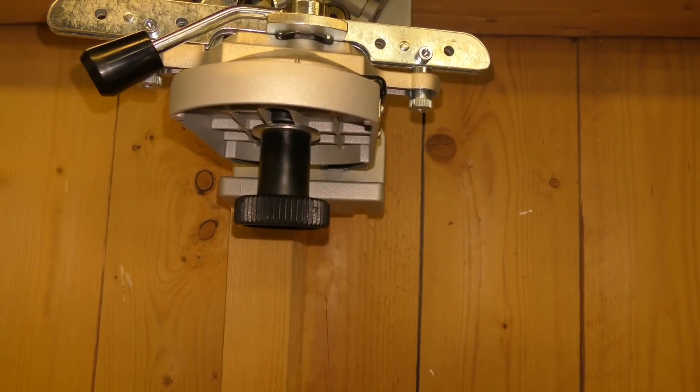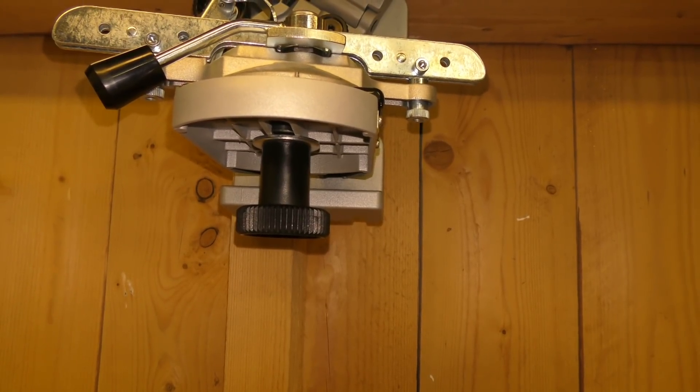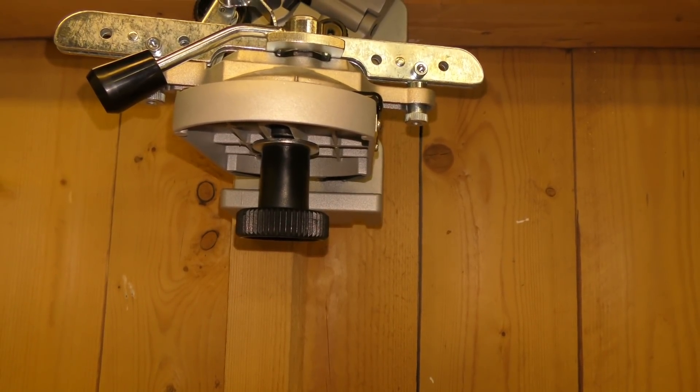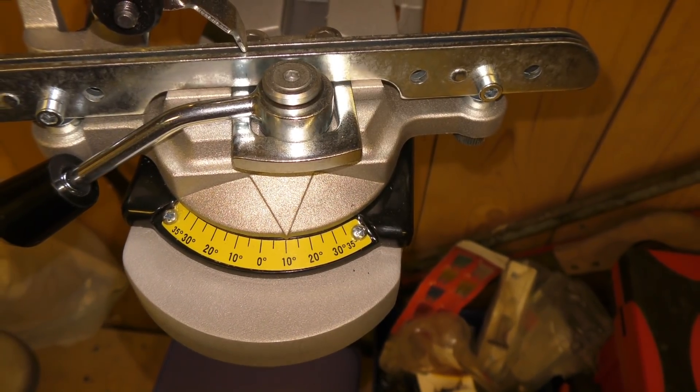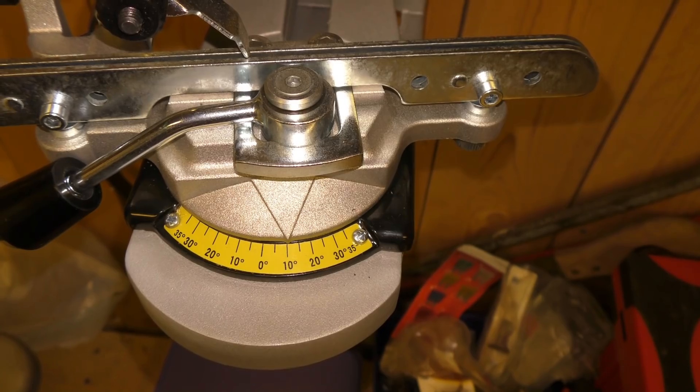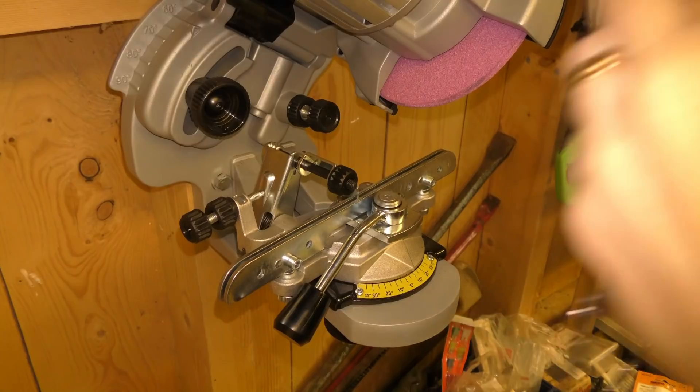Underneath, there is a knob to loosen the base so you can turn it to get the right angle of each cutting tooth. For the ripping chain, it should be set to 10 degrees positive for the first tooth and 10 degrees negative for the second. And so on.